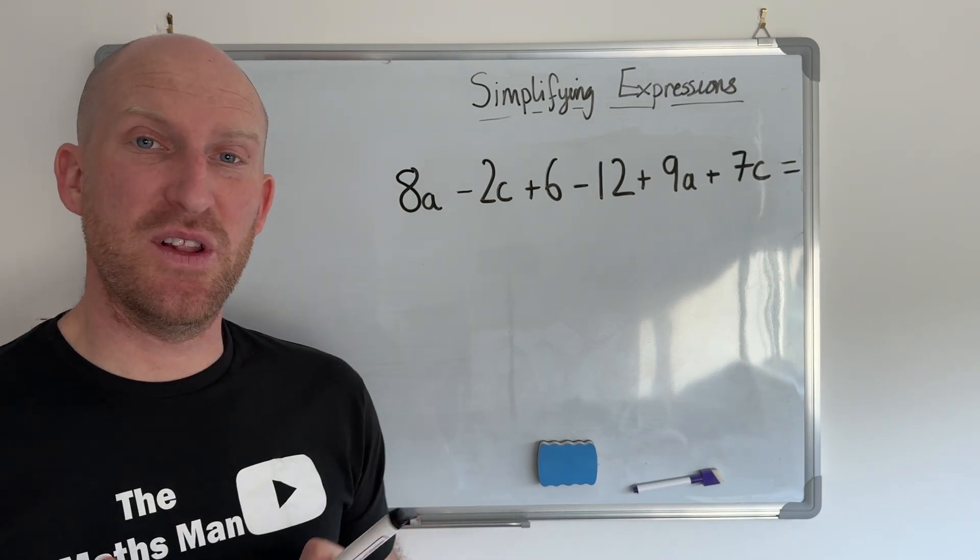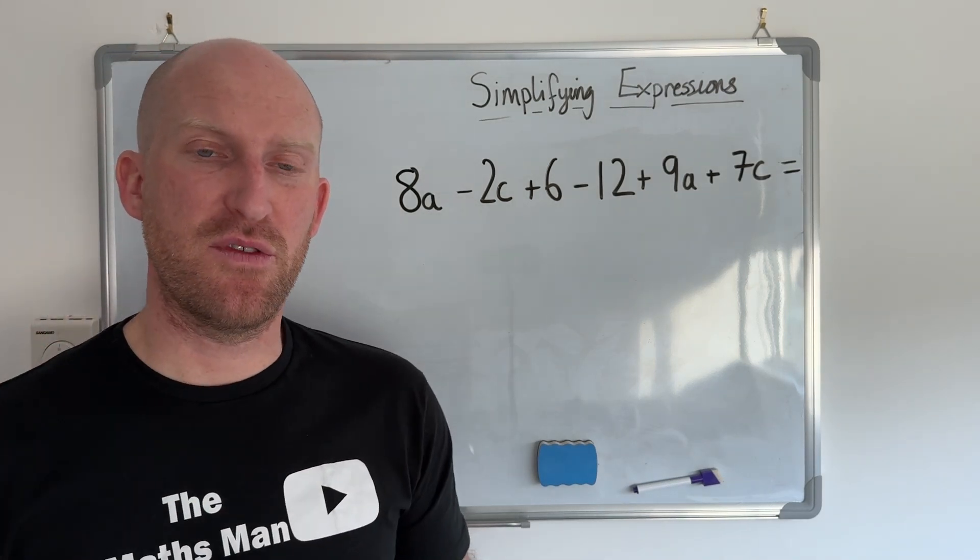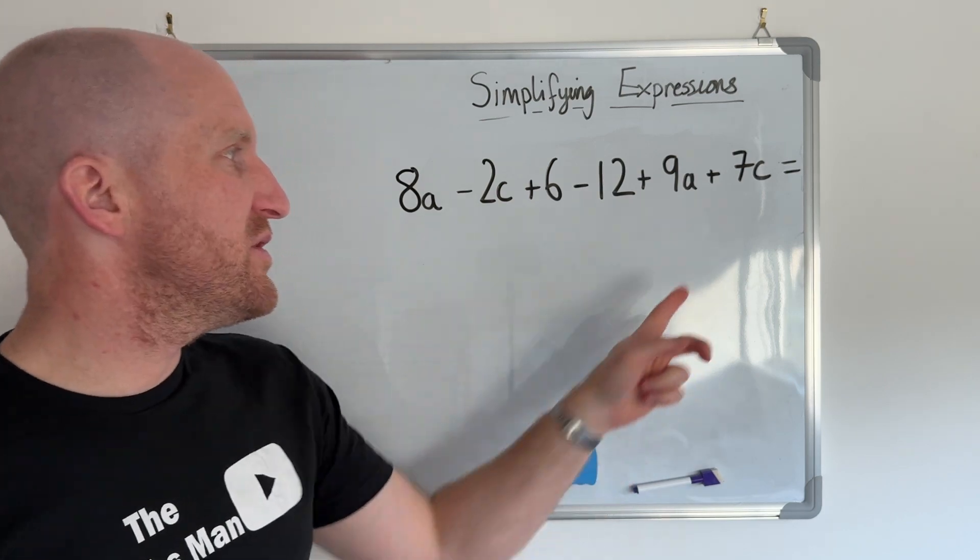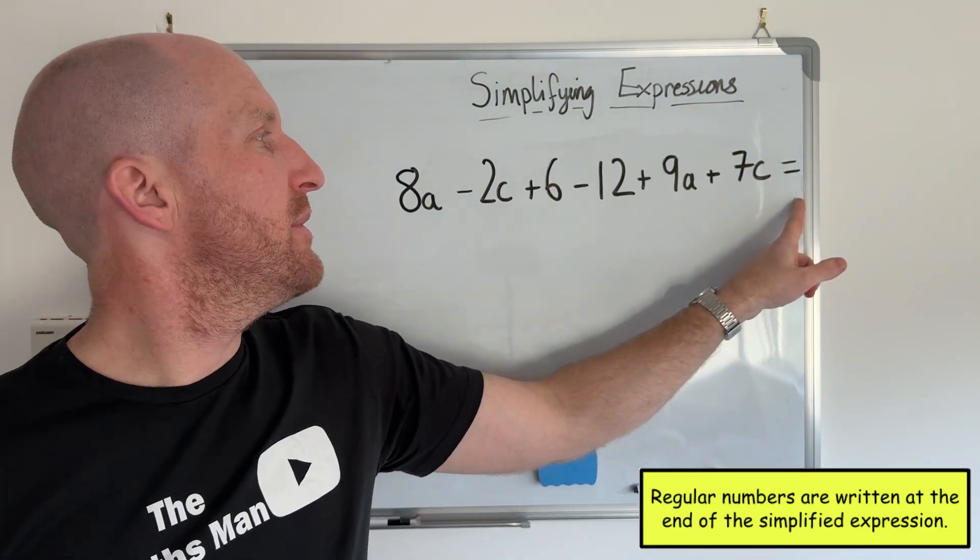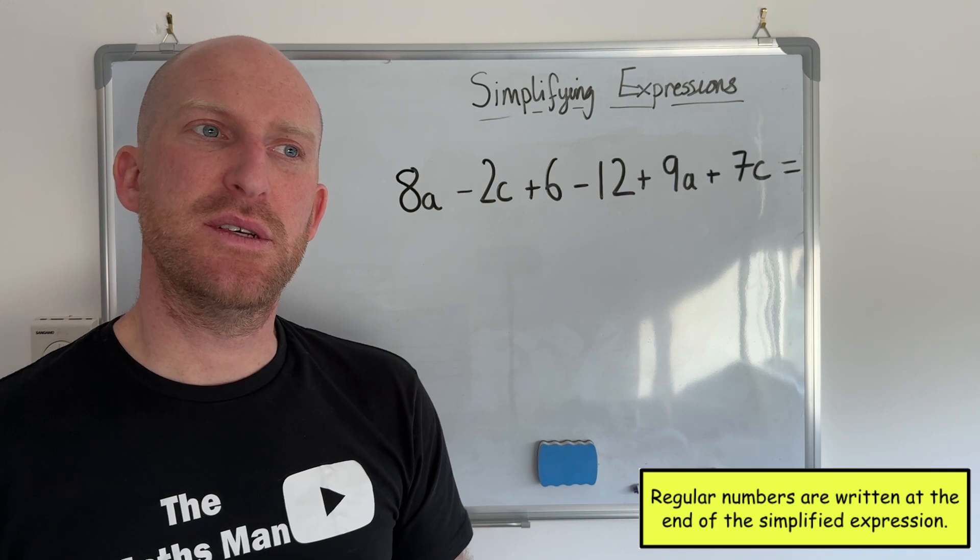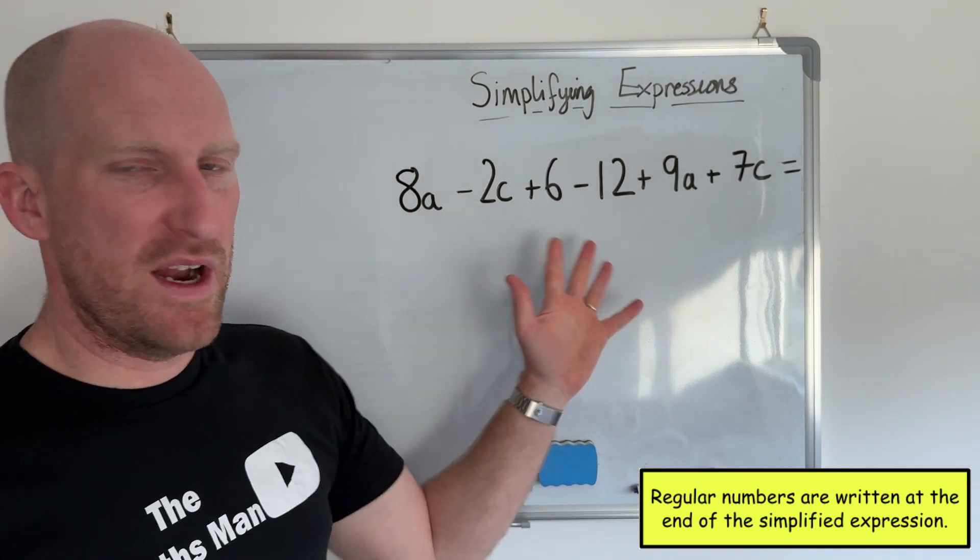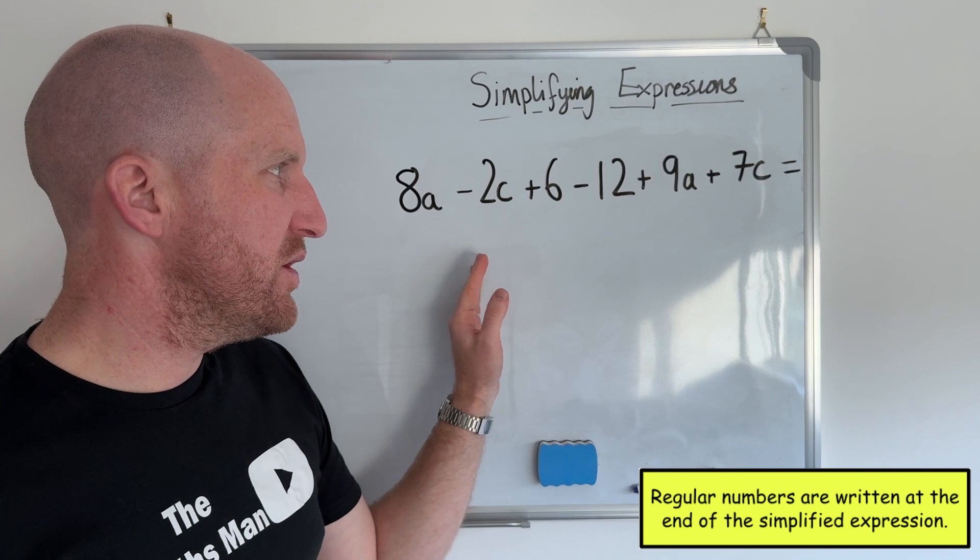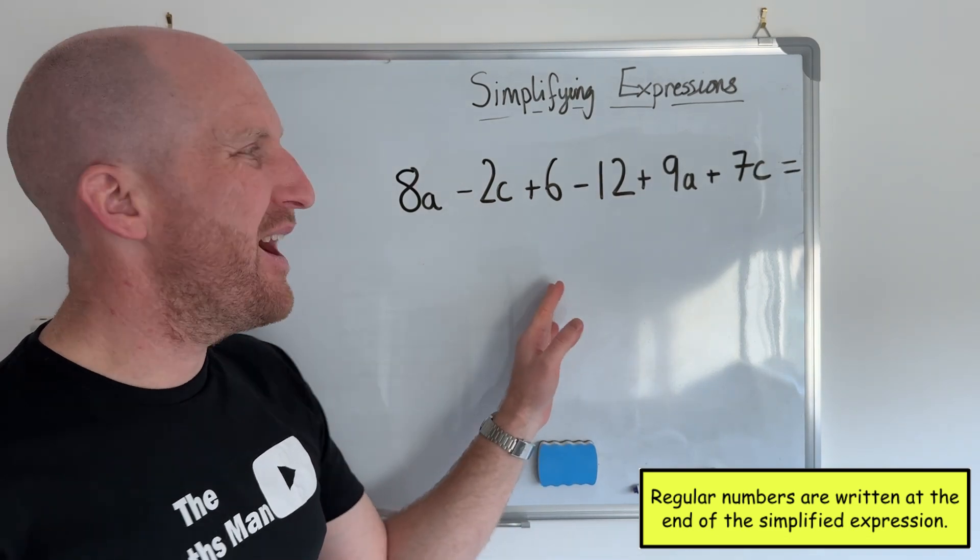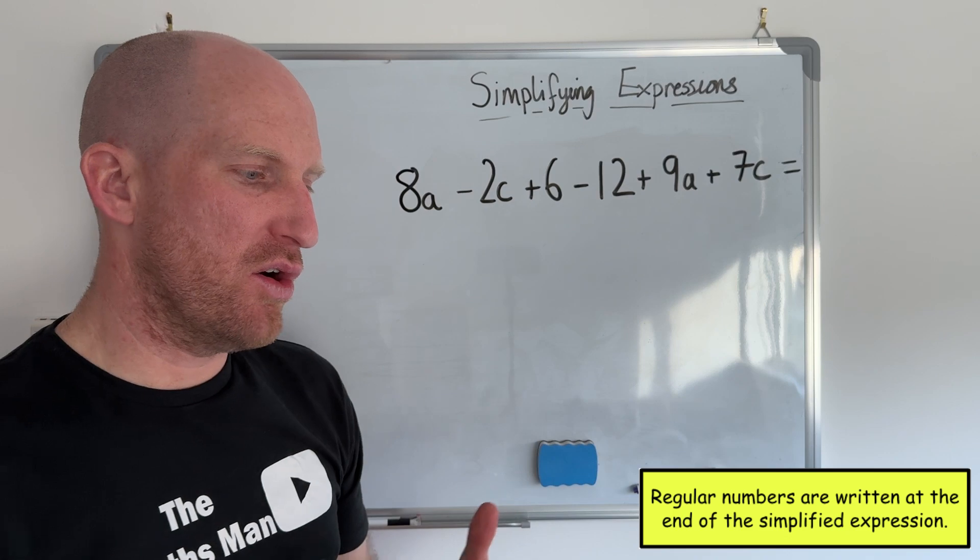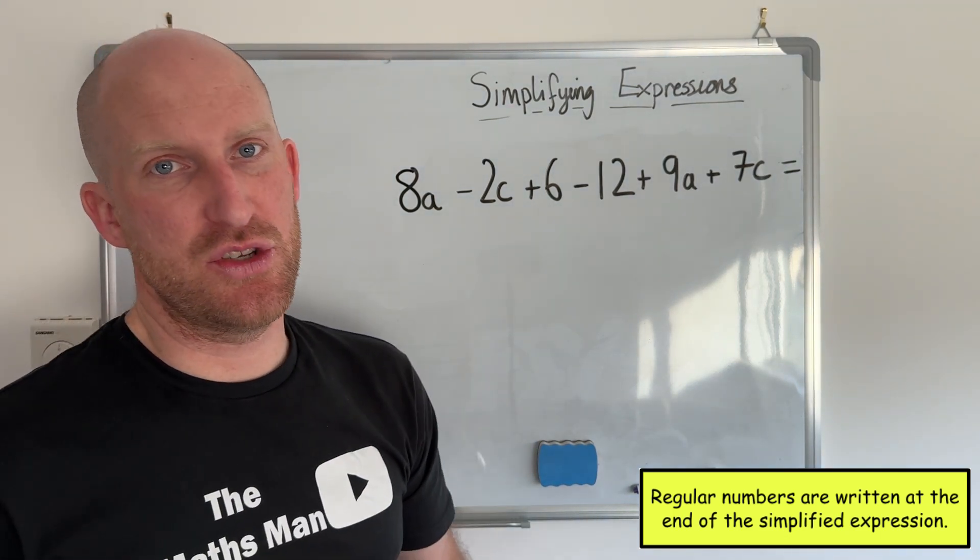So in this next example we've gone another step further. We've gone a little harder. Now what we have is we have two different terms. So we have a and we have c. And we also have just some regular numbers that aren't a term. So again when I write my answer I'm going to put a first. Then I'm going to put c. And then I'm going to finish with the regular number. So that's the order in which we must write answers in algebra.